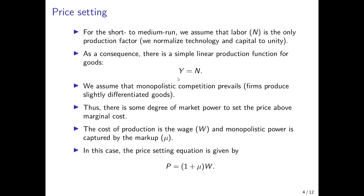We assume a very simplified linear production structure, where if firms employ more workers N, they can produce more output Y. The crucial point is that we assume some form of monopolistic competition — not perfect competition where firms are price takers, but monopolistic competition, so firms have some power in setting the price level. Firms produce slightly differentiated goods, meaning there is no perfect substitution among goods, and firms can charge a price slightly above their marginal cost.